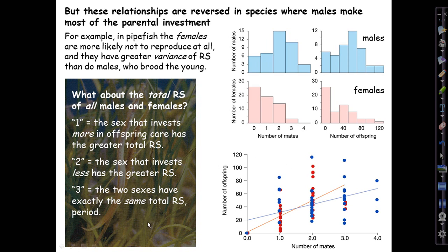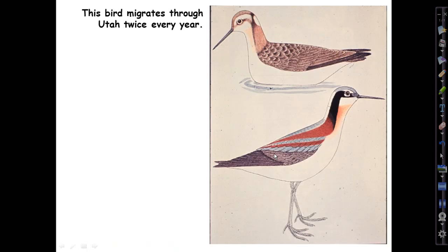Here are clicker questions that could show up on an exam. What about total reproductive success of males and females? The choices are: the sex that invests more in offspring care has greater total reproductive success; the sex that invests less has the greater total reproductive success; or the two sexes have exactly the same total reproductive success, regardless of the mating system. Think about that and be sure you understand the principle going on there.